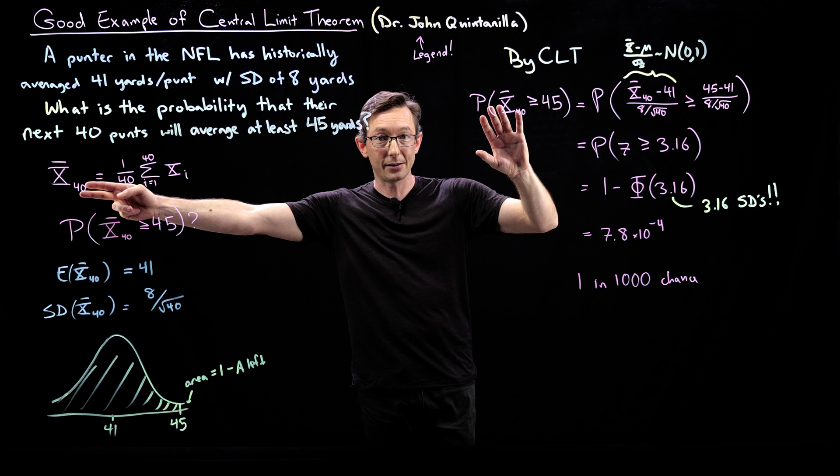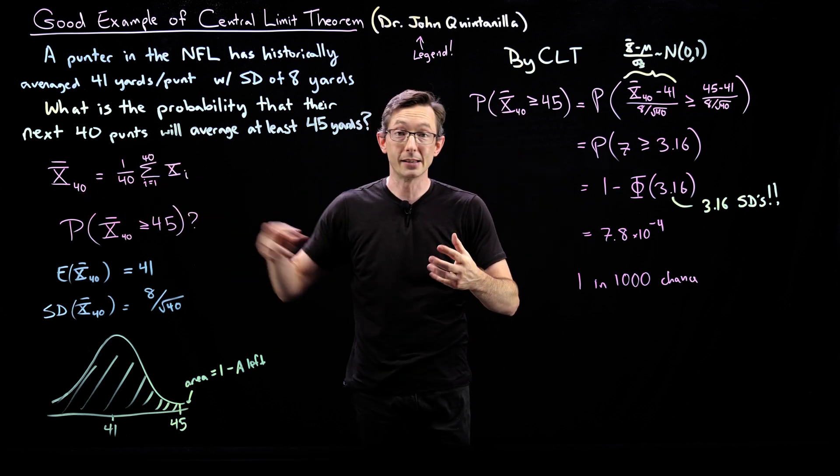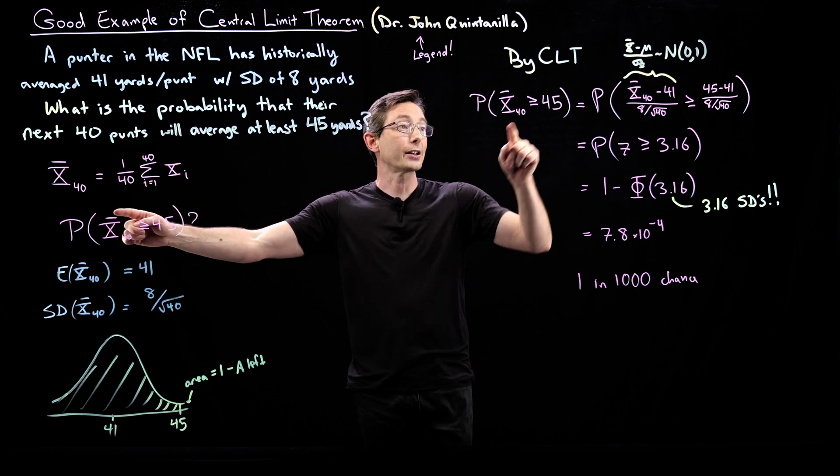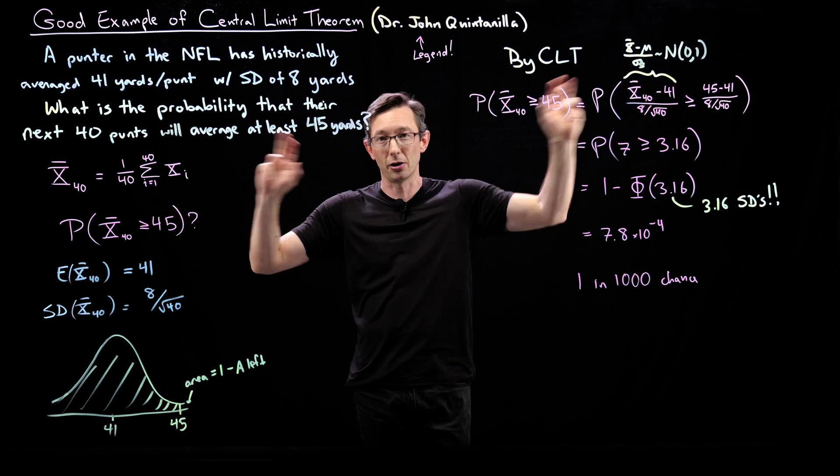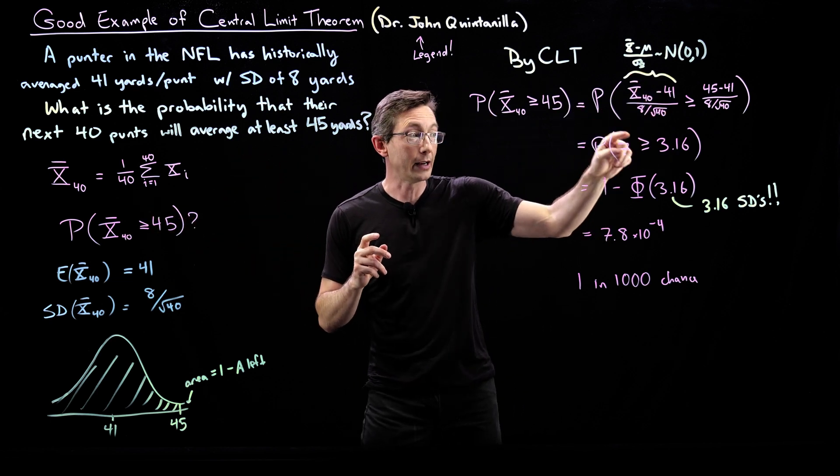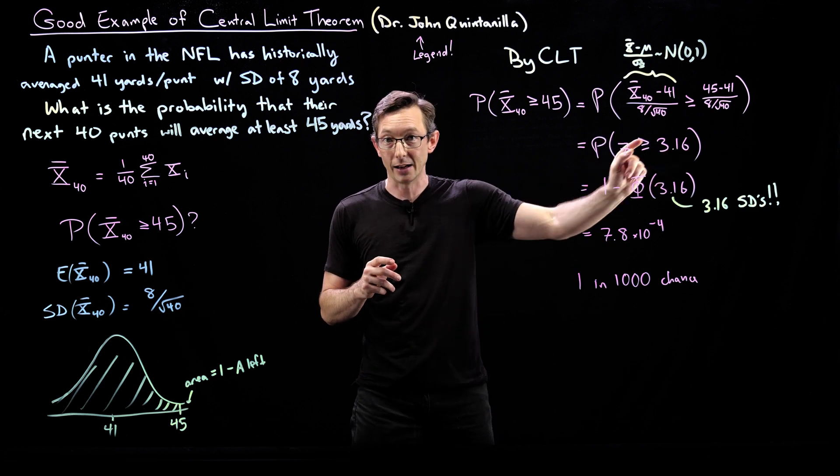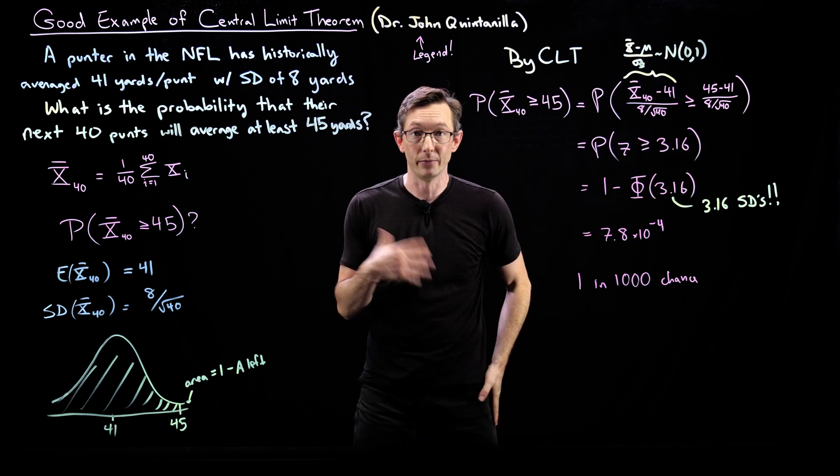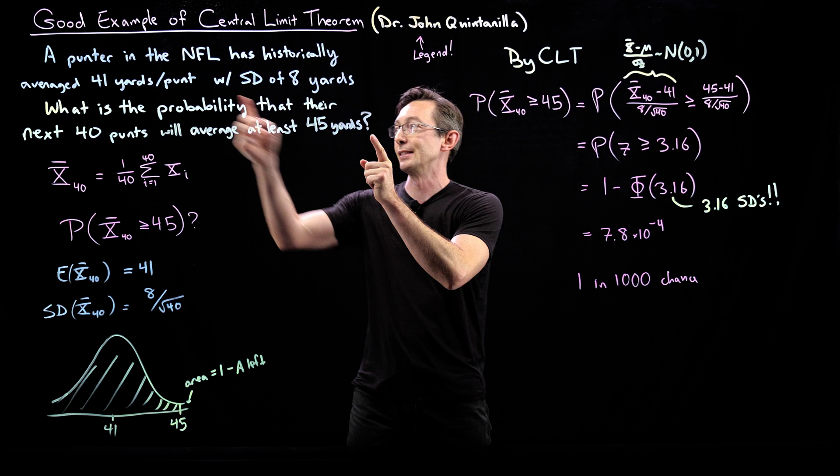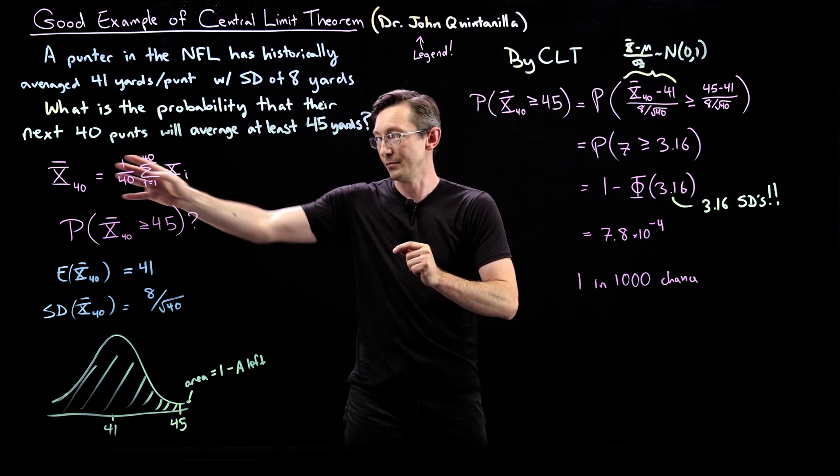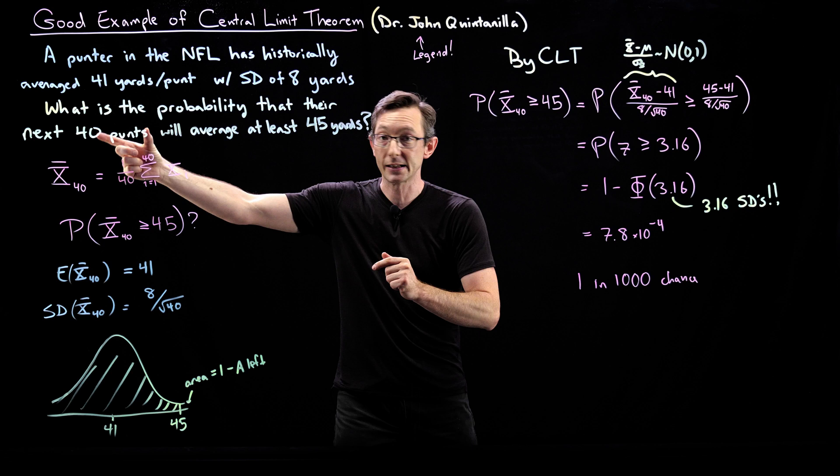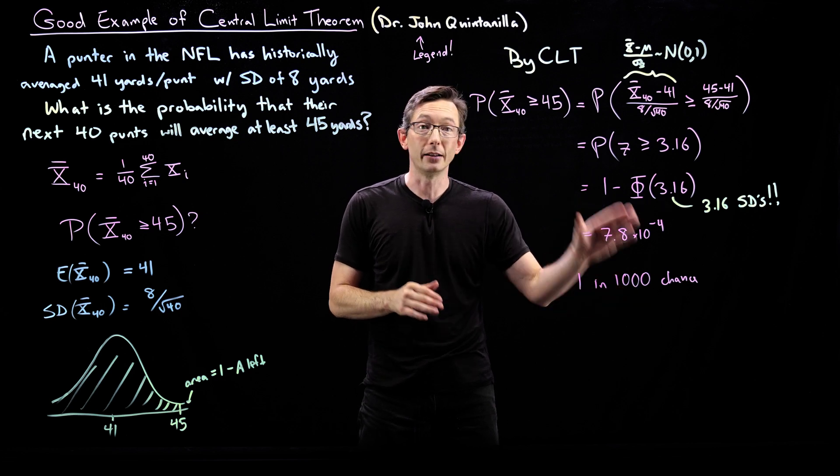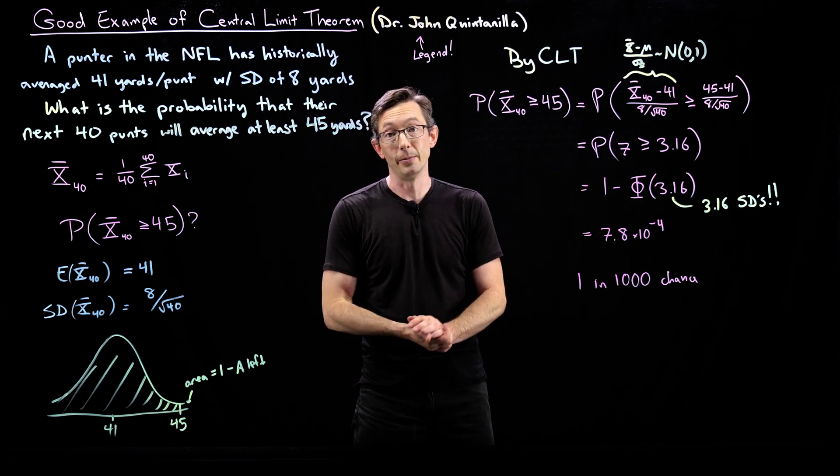This is a great application of the central limit theorem. It shows how you can compute something pretty interesting by creating this random variable, realizing that 40 punts is enough for the central limit theorem to kick in. The sum of all of these individual punts is going to be normally distributed. And so you can subtract off the mean, divide by the sample standard deviation called the standard error. And now you have a unit normal random variable, and you can compute exactly how likely it is for that to be more than 3.16 standard deviations outside of the mean. And that's what 45 yards is to 41 yards in the next 40 kicks. 45 yards over the next 40 kicks is 3.16 standard deviations away from their historical average. Very unlikely, one in a thousand chance, easy to compute with the central limit theorem.